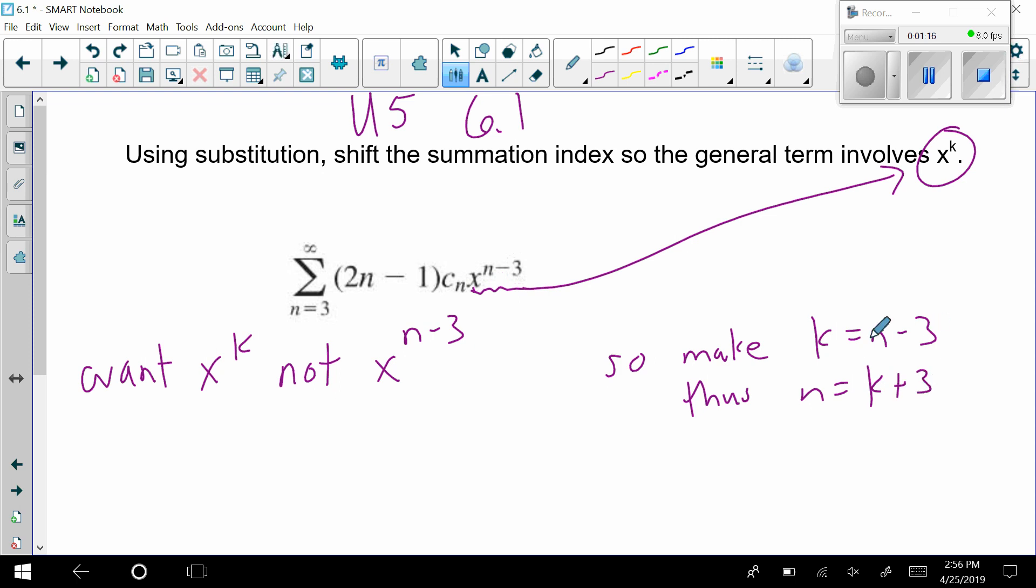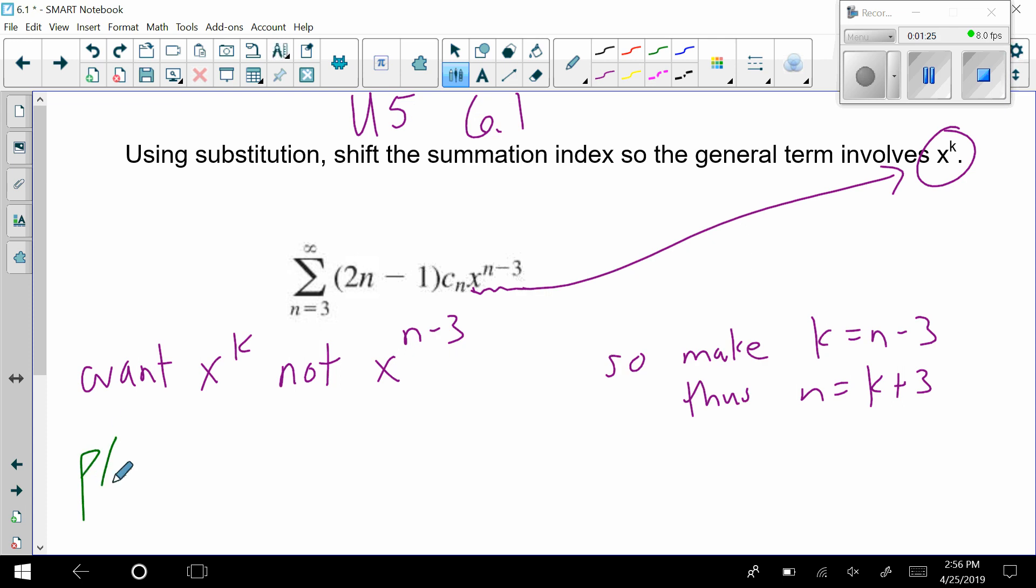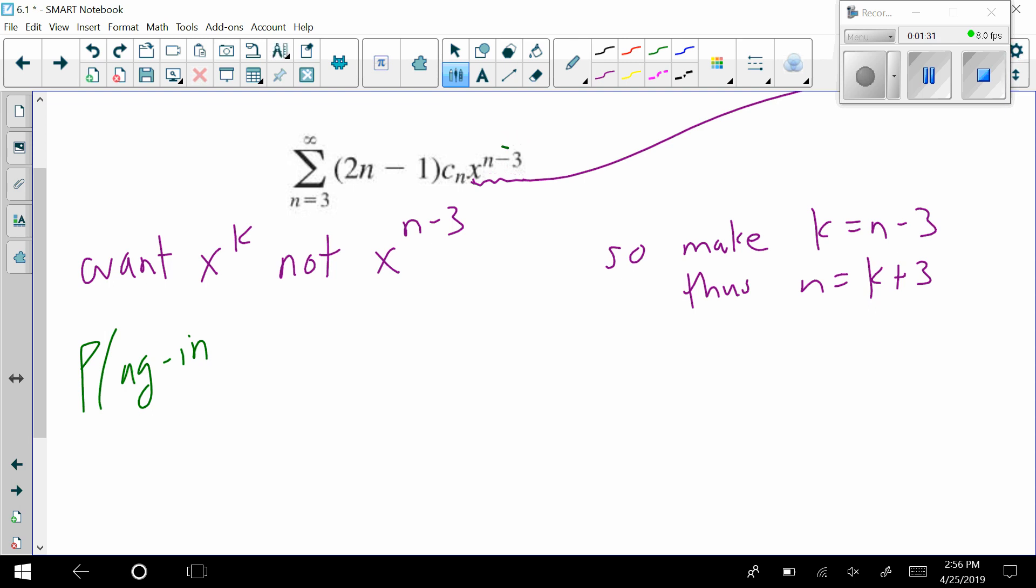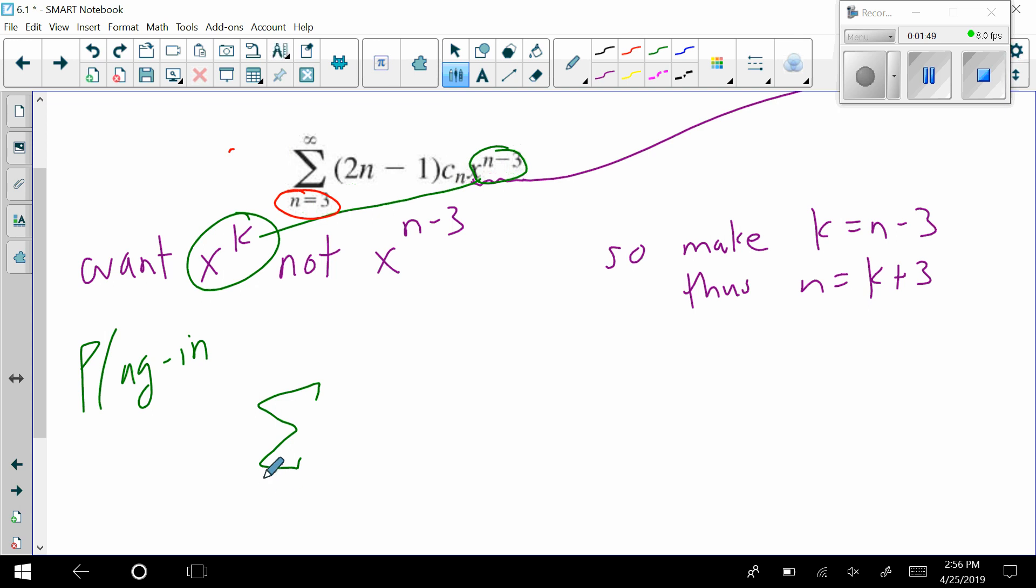So I have that. Now the next thing I do is I just need to plug in the stuff that I want. Well, this part here is coming out and this part is going in. When I go to write this summation sign, this n equals three here can't be there because I can't have an n. N equals this k plus three, so I can put k plus three.